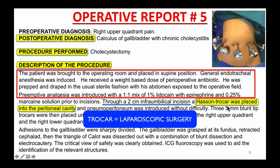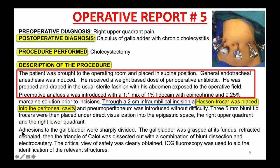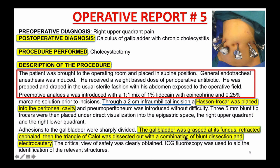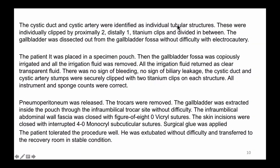Your next step is to confirm the gallbladder was actually removed. 'Adhesions to the gallbladder were sharply divided. The gallbladder was grasped and its fundus retracted cephalad. The triangle of Calot was dissected out with a combination of blunt dissection and electrocautery.' Based on what I just read, the gallbladder was grasped, retracted, and dissected out. I now have all the crucial information to code this case: post-op diagnosis — calculus of gallbladder with chronic cholecystitis; procedure performed — laparoscopic cholecystectomy. You don't need to read the remaining text.